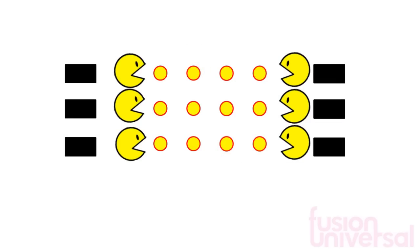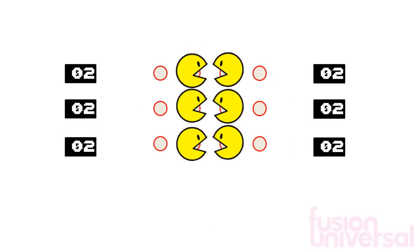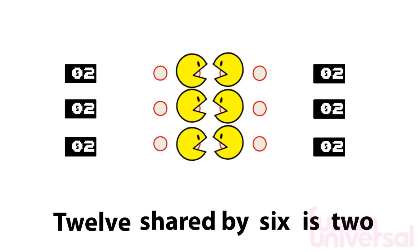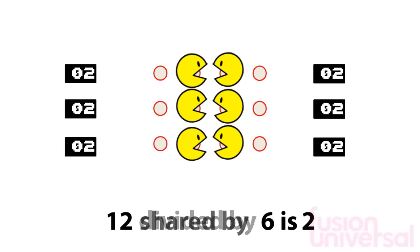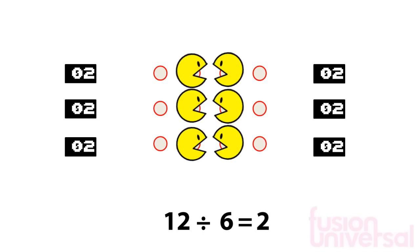Finally, we have 6 creatures. They each get 2 pills. 12 shared by 6 is 2. Or 12 divided by 6 equals 2. And using mathematical symbols, 12 divided by 6 equals 2.